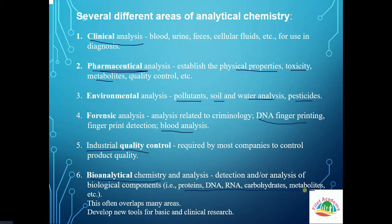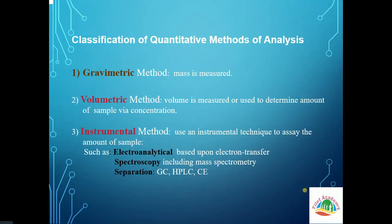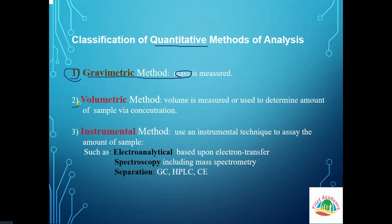The quantitative method of analysis is classified by how much and how many. This is the gravimetric method — mass is measured. This is the volumetric method — volume is measured. Concentration is calculated.